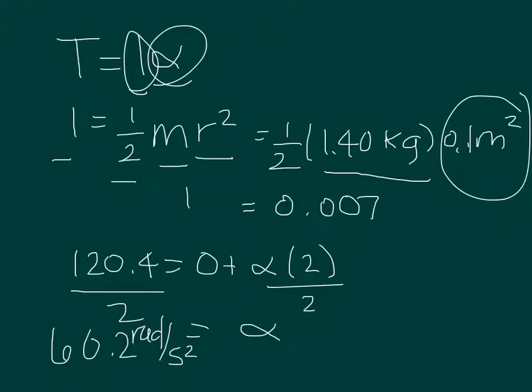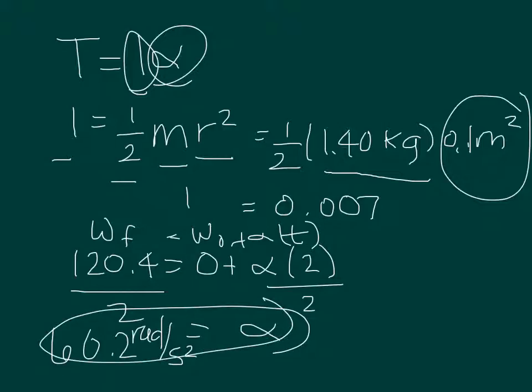The acceleration, we can just use one of our kinematic equations, where final velocity is equal to initial velocity, and the problem tells us that it's starting at rest, plus the acceleration times the time. So we plug everything in there, and we get an acceleration of 60.2 radians per second squared.